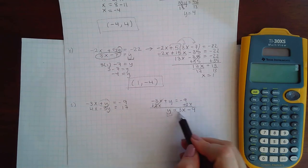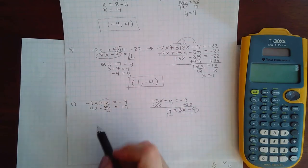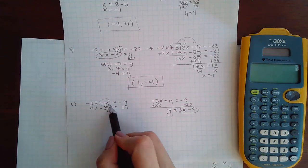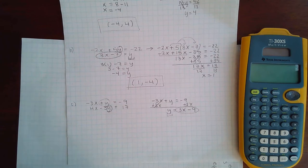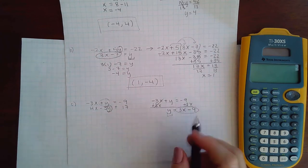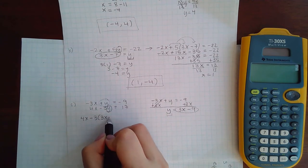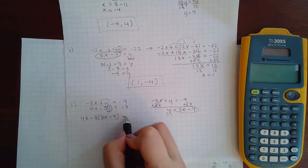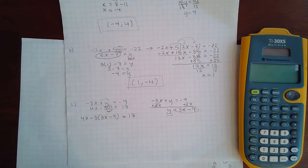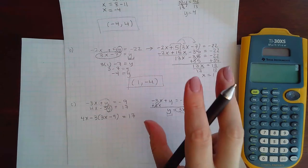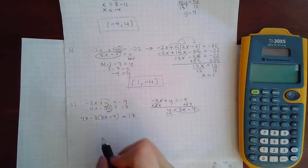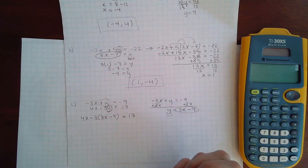instead of using y, I can use its equivalent expression into the other equation that I didn't just use. So then now I'm going to do 4x minus 3 times that expression 3x minus 9 in place of the y. So remember, you're replacing these variables. That's the substitution part. You should not have the y and the 3x minus 9 both. It should completely replace it.